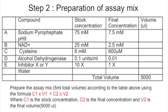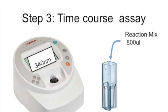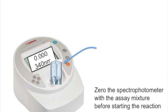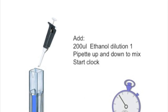Remember that you will use either inhibitor X or Y, and agree with your neighboring group to use the opposite — if you use X, they will use Y. You are now ready to start the reaction. Pipette 800 µl of the reaction mix into a cuvette, put the cuvette in the spectrophotometer, and zero it at 340 nm.